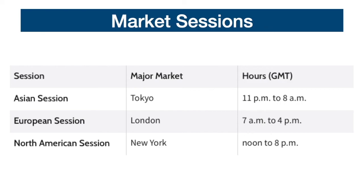The American session is the second most volatile session of the three. The economic center that runs this session is New York, with other important centers including Canada and Mexico. This session starts at noon and finishes at 8 pm GMT. In this session we often find high-impact news releases, causing volatile price movements especially for the US dollar and the Canadian dollar. The most intense moments in the market are during the overlapping sessions. There are two overlaps: one between the Asian and European sessions, and the other between the European and American sessions. The overlap between the European session and the American session is the busiest and most liquid time in the market — both sessions are active for four hours, making it the most volatile and at the same time the most risky time of the day.